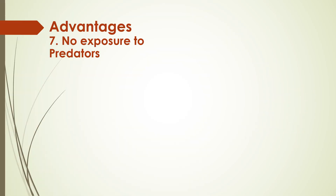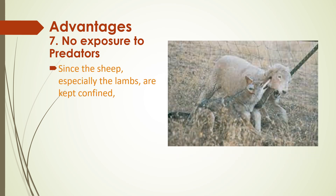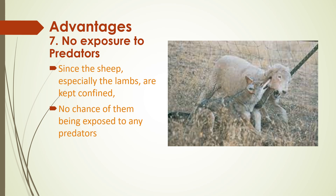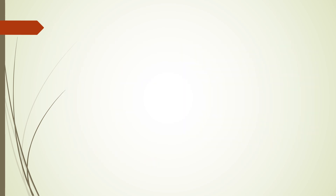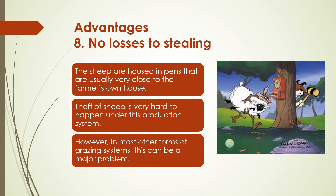The seventh advantage is that there is no exposure to predators. This is a cause of high mortality in open grazing systems. The eighth advantage is no loss to stealing. Because the sheep are housed full time in pens that are usually very close to the farmer's own house, theft of sheep is unlikely to take place under this production system. However, in most other forms of grazing systems, this can be a major problem.